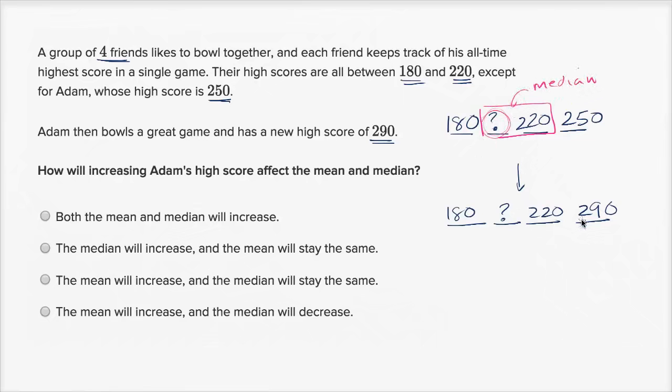Now over here, after Adam has scored a new high score, how would we calculate the median? Well, we still have four numbers, and the middle two are still the same two middle numbers. Whatever this friend's highest score was, it hasn't changed. And so we're going to have the same median. It's going to be 220 plus question mark divided by 2. It's going to be halfway between question mark and 220. So our median won't change.